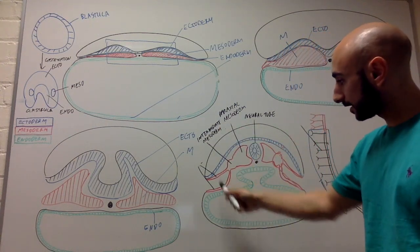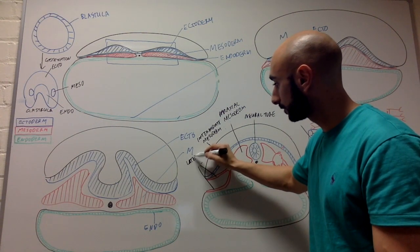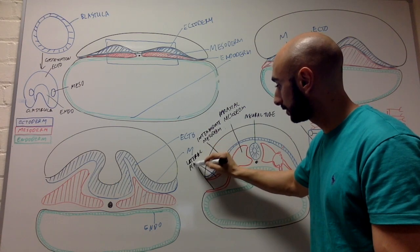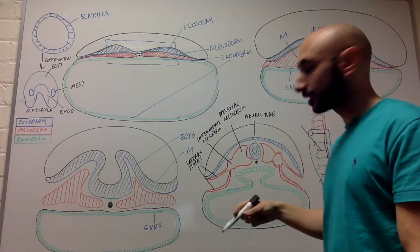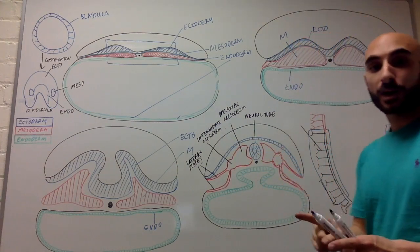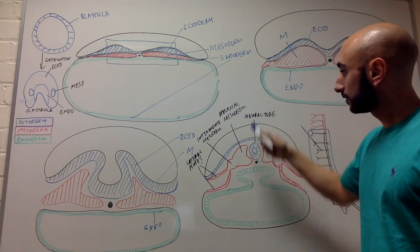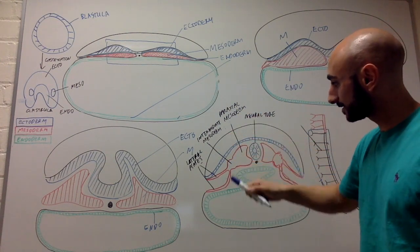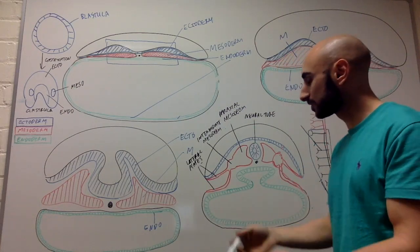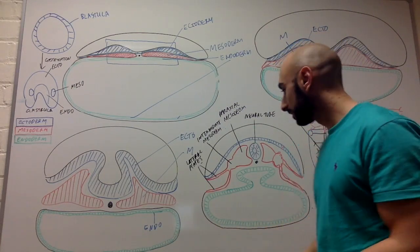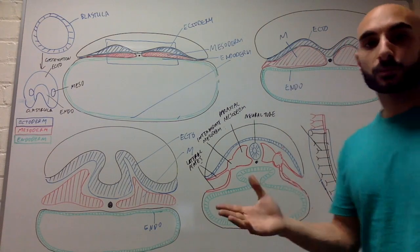And then the final part, this thing that looks like a couple of plates, just happens to be called the lateral plates. Lateral, because it's on the side. And the intermediate mesoderm is called intermediate because it's in the middle. This is what you should know. The mesoderm - paraxial mesoderm, intermediate mesoderm, lateral plates. And the lateral plates develop into circulatory vessels, etc.